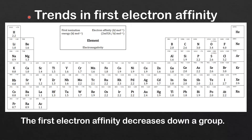Next we look at trends in the first electron affinity. The general trend is that the first electron affinity decreases down a group.